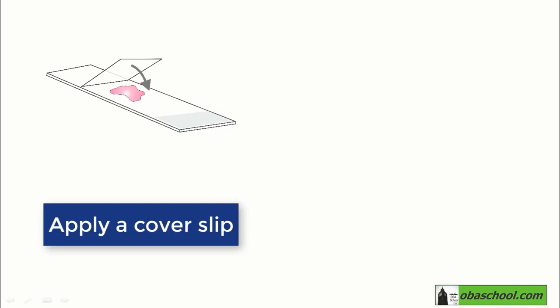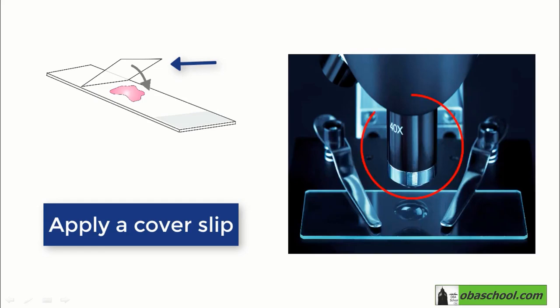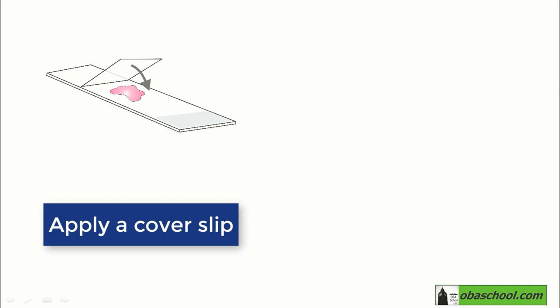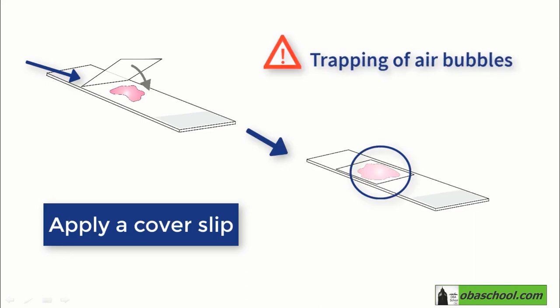Finally, apply a cover slip, which is a thin, transparent rectangle of thin glass which protects the objective lens from contamination, over the top of the sample by lowering it gently to avoid trapping air bubbles.